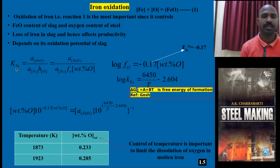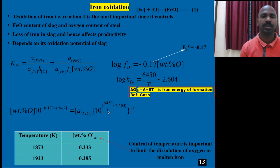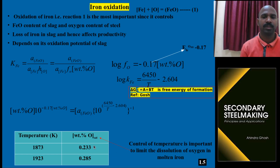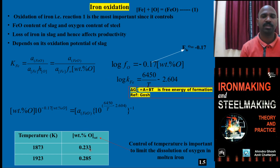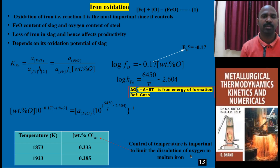With A of FeO and log K of equilibrium, when you apply log A of Fe and A plus BT form, you can solve and calculate the weight percentage of oxygen. At 1873 K, when you apply the temperature value and assume A of FeO equal to 1, you can calculate weight percentage of oxygen. This is the dissolved oxygen in the molten steel after the secondary steelmaking process.